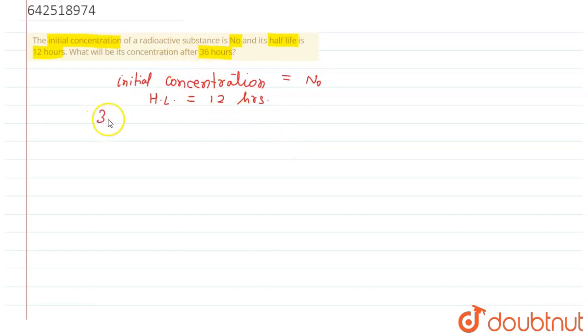If we look at 36 hours, this is nothing but 12 times 3. That means in three half-lives, we can determine what amount of radioactive sample will be present.